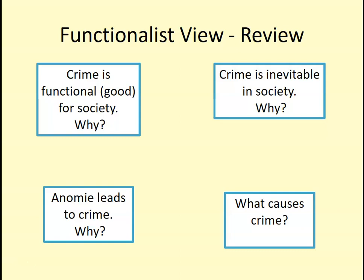First, write down what you know from the functionalist point of view: why is crime functional or good for society according to functionalists? Any examples to illustrate that. Also, crime is inevitable in society according to Durkheim — why? Then anomie: a key concept from Durkheim, who argued anomie leads to crime. Define anomie there. Finally, what causes crime according to functionalists? Make a simple list.